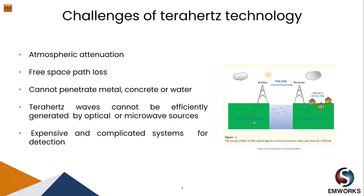Now let's look at some of the challenges of terahertz technology. Although it has promising characteristics, there are still challenges and limitations that need to be overcome. Atmospheric attenuation is one of the main challenges — as the wave travels in the atmosphere, it gets absorbed by water and oxygen molecules. Free space path loss is another problem, as the wave gets attenuated by the square of the carrier frequency and the traveling distance. As a result, the wave cannot travel long distances, which is why terahertz can only be used for short-range communication. It cannot penetrate metal, concrete, or water.